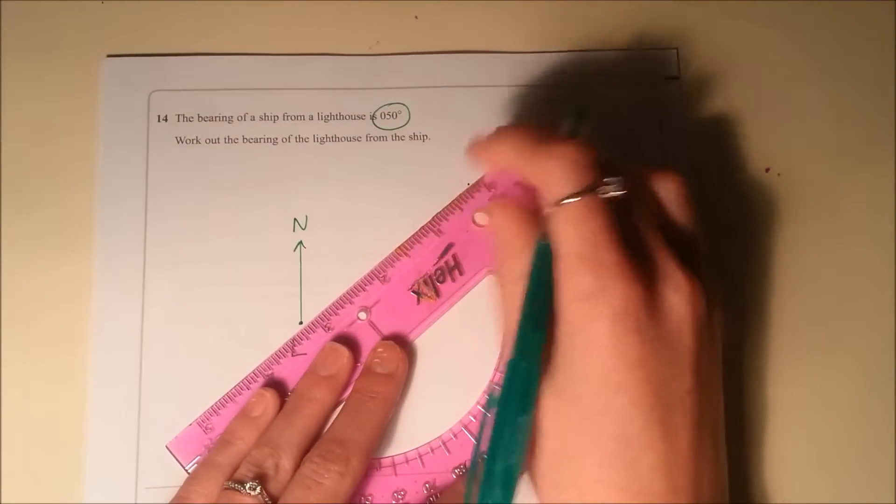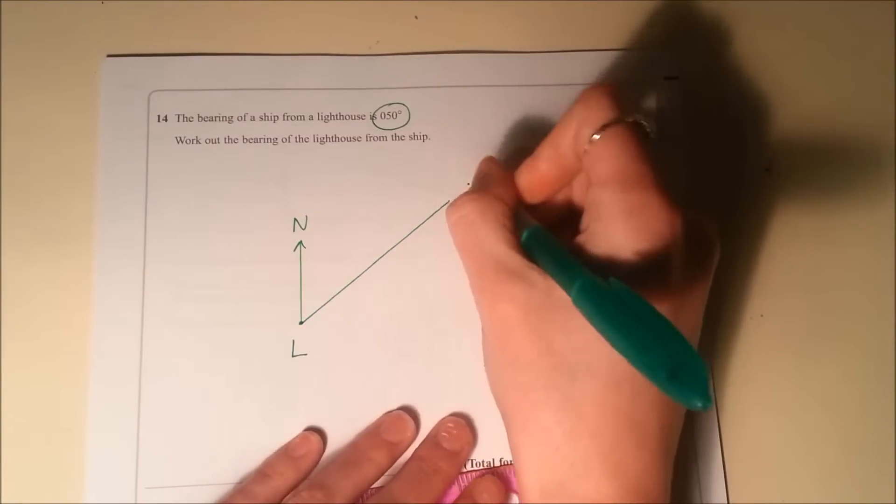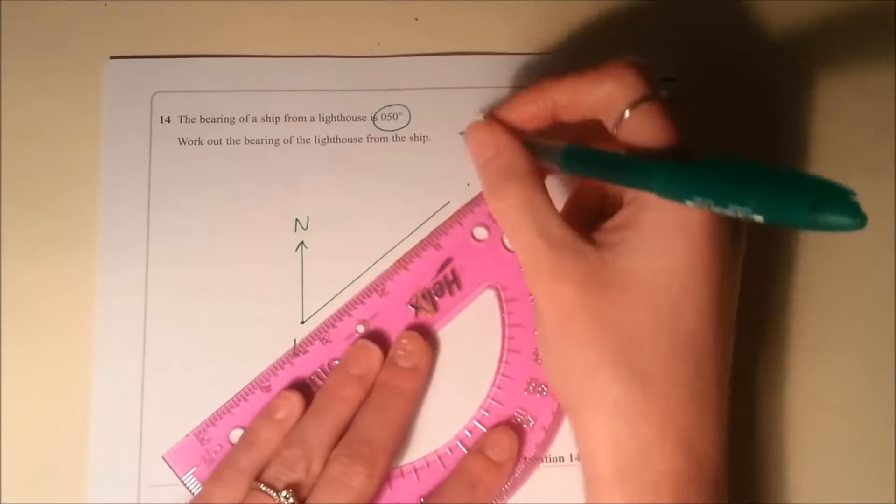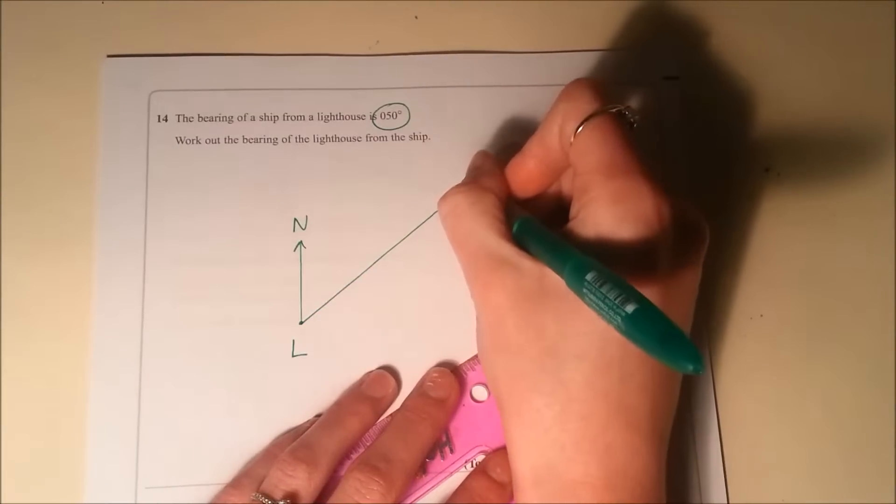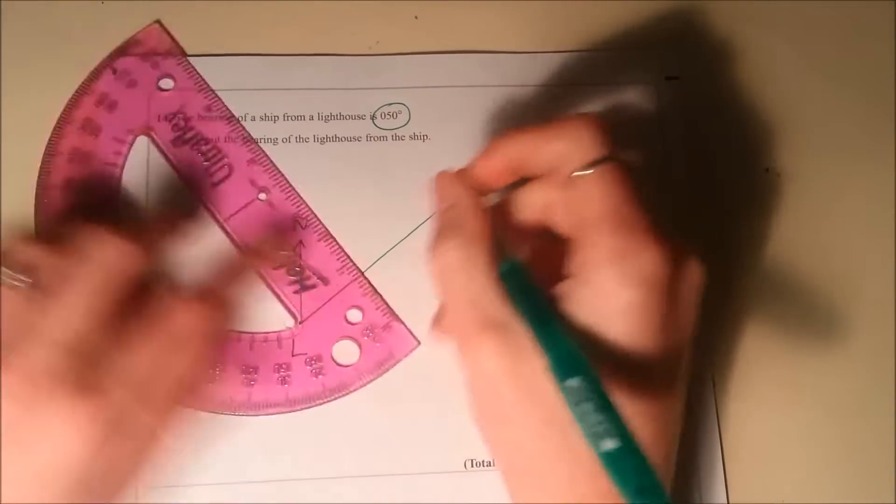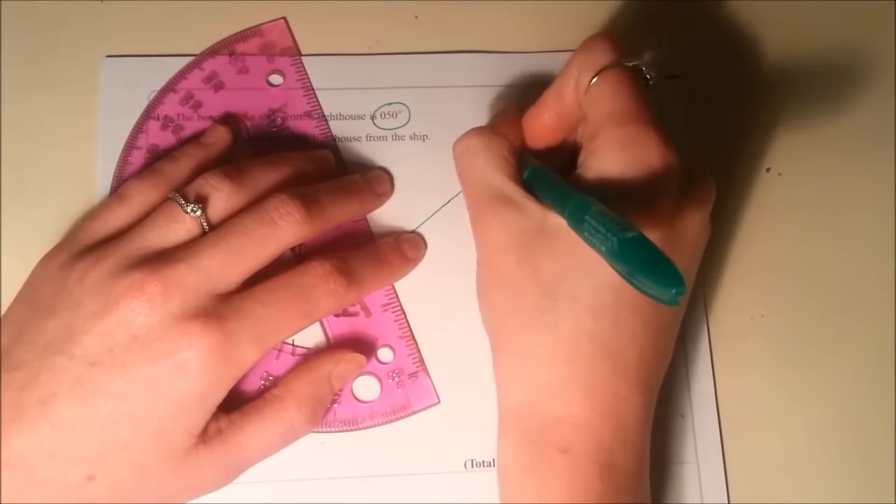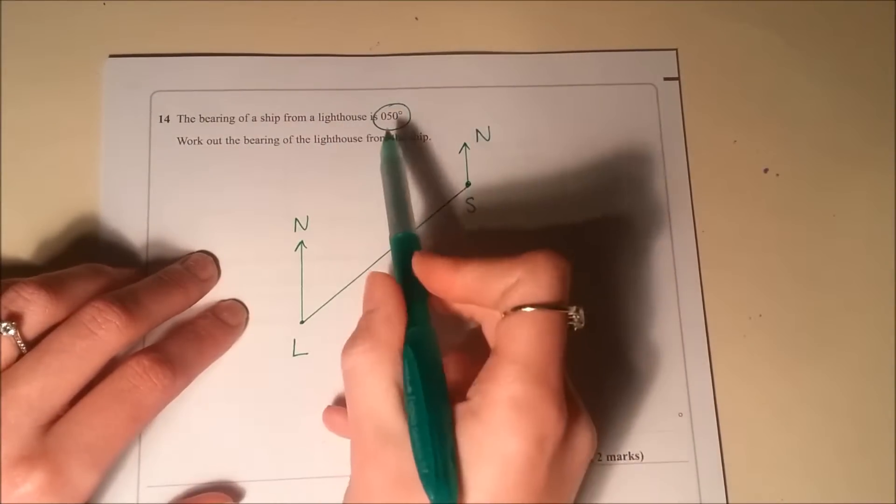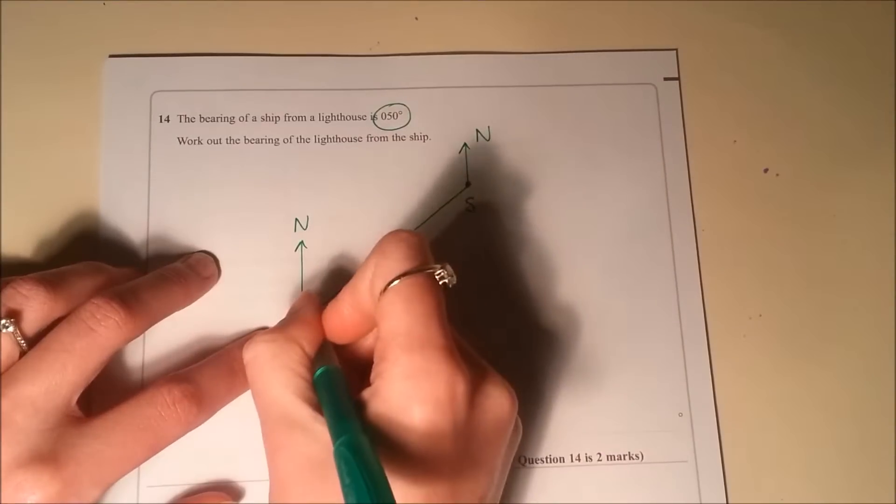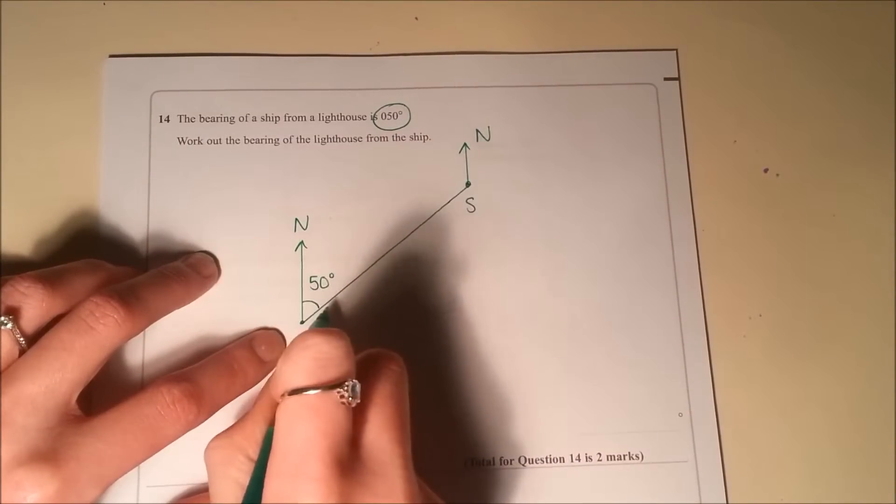Then my ship is somewhere over here. The bearing of the ship from the lighthouse is 50, so what I'm saying is if I'm standing at the lighthouse and I want to look at the ship, I've got to turn 50 degrees from north.